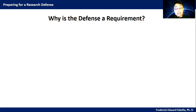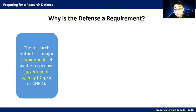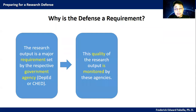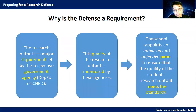So why is the defense a requirement? The research output is a major requirement set by the respective government agency, whether it's the Department of Education or the Commission on Higher Education. The quality of the research output is monitored by these agencies. That is why the school appoints an unbiased and objective panel to ensure that the quality of the student's research output meets these standards.